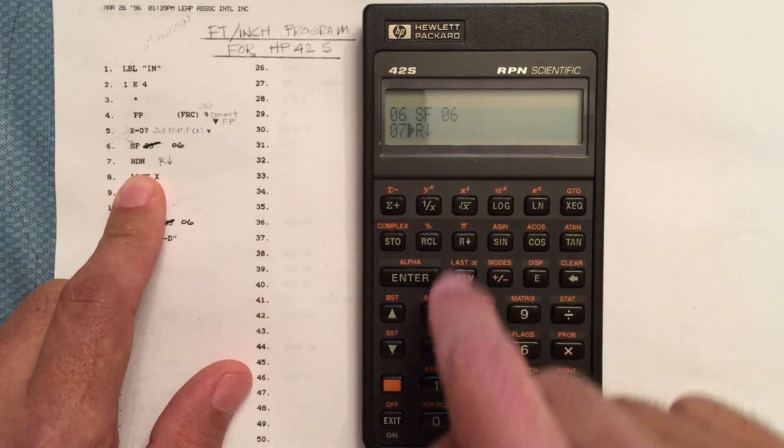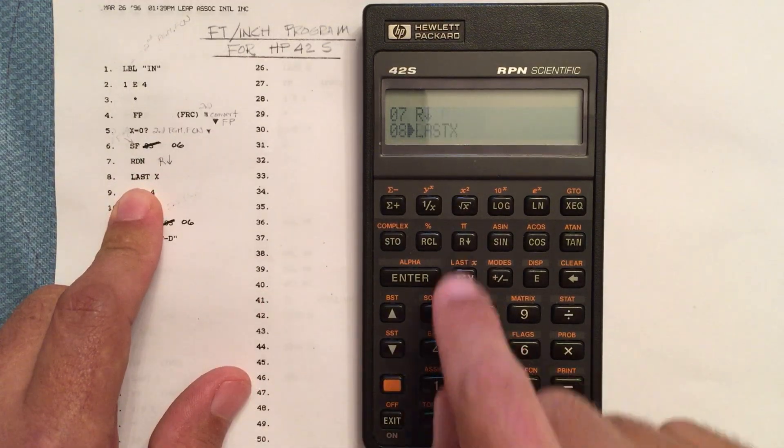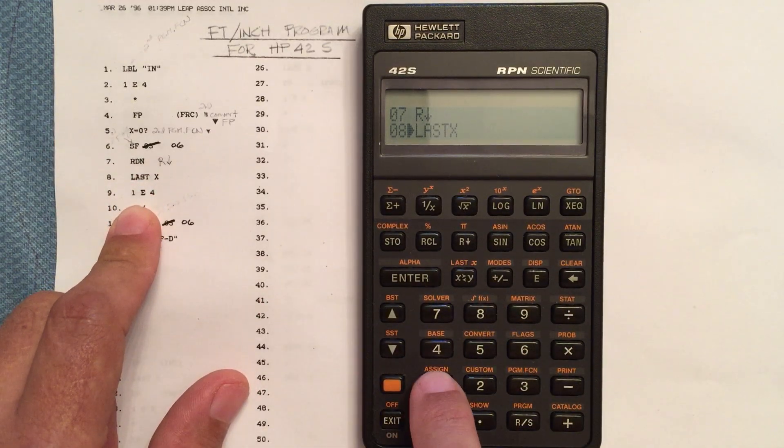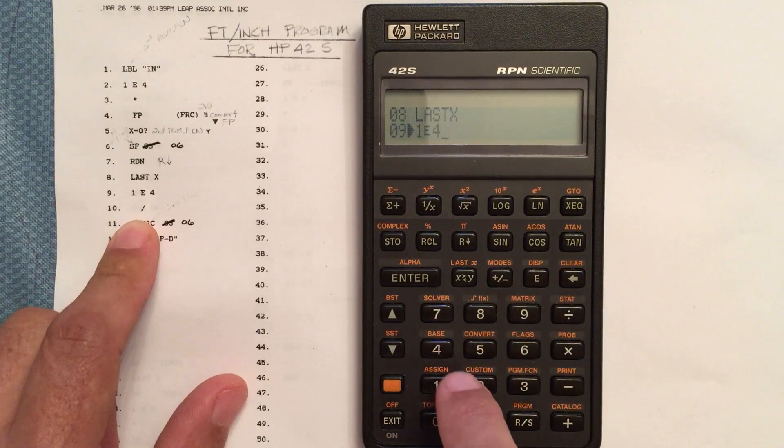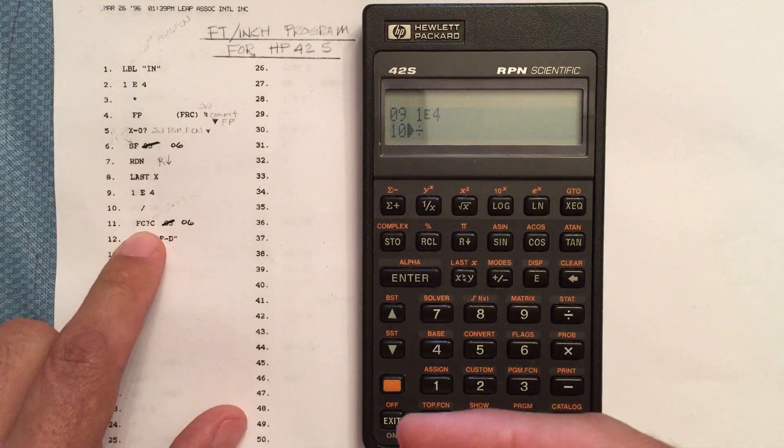Okay, that's roll down. R down. We're going to roll the stack down. Last x. Again, 1 times 10 to the 4th, and we're going to divide it. Presumably that takes out the 1 times 10 to the 4th we multiplied earlier.